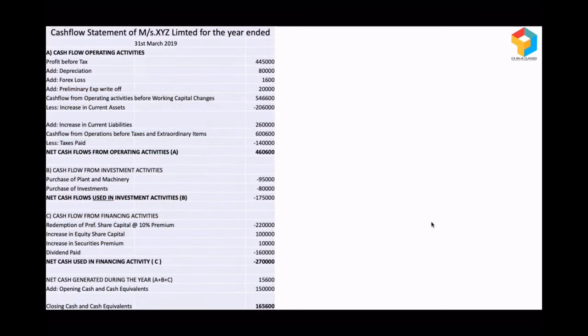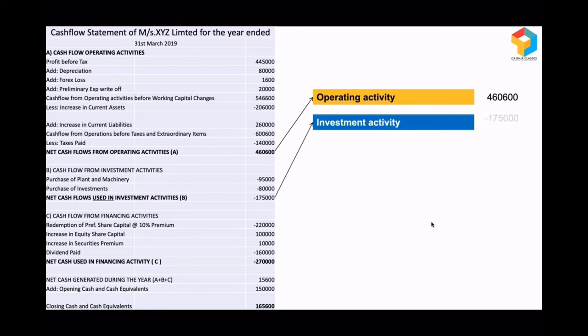Let me show you a real-life cash flow statement — it will look something like this with many line items and sub-line items. As a bank executive, your focus should be on how to read the cash flow statement, since preparation is handled by accountants. Look at cash flow from operating activity — it is a positive figure of 4,60,600. Investment activity is a negative figure of 1,75,000, meaning 1,75,000 cash had gone out because they made some investments, such as purchasing plant, machinery, and other investments.